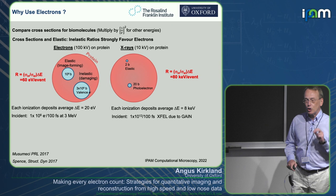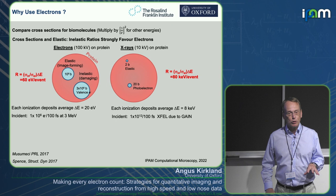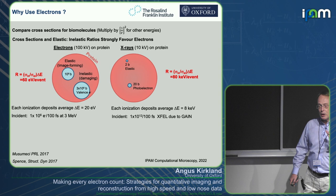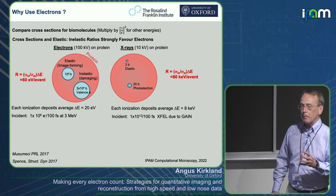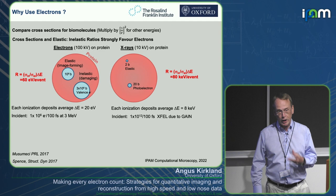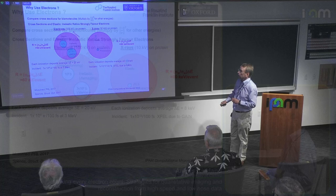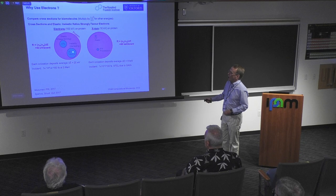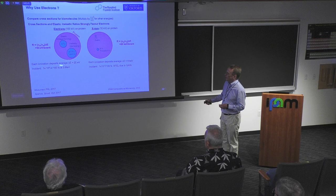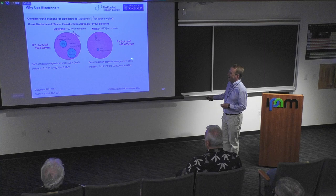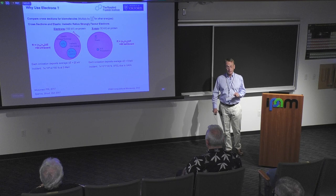That's good and bad: for a given flux density, we need fewer electrons than X-rays. But it comes with a problem — the electrons interact strongly, we have significant multiple scattering, and that means we have to use computational simulations to match the image data, which is not a problem the X-ray community has. For each ionization event, electrons deposit on average about 20 electron volts, whereas X-rays deposit about 8 kilovolts — so for each inelastic collision, the electrons are less damaging than X-rays.